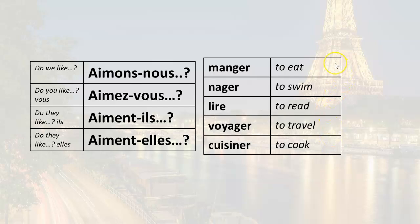Now the question, do you like. Remember, aimez-vous, this is the plural you. Do you like to eat? Aimez-vous manger? Do you like to swim? Aimez-vous nager? Do you like to read? Aimez-vous lire? Do you like to travel? Aimez-vous voyager? And do you like to cook? Aimez-vous cuisiner? Remember, this is asking two or more people, do you like.